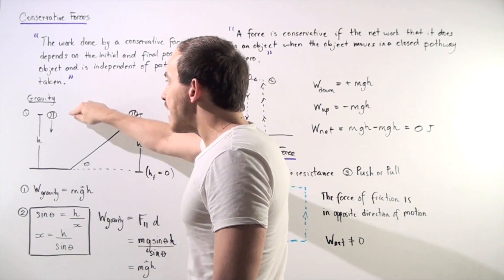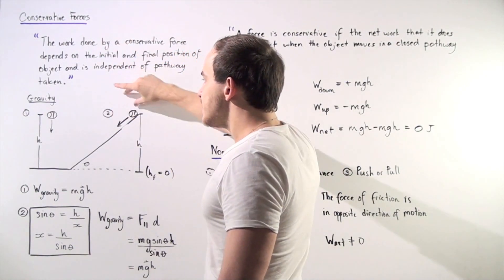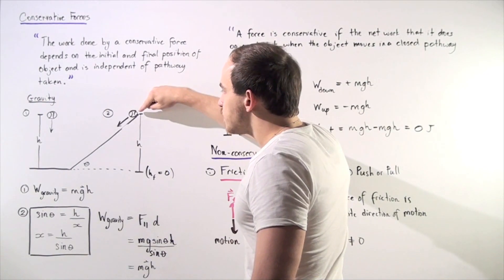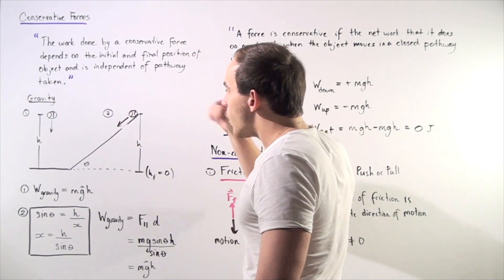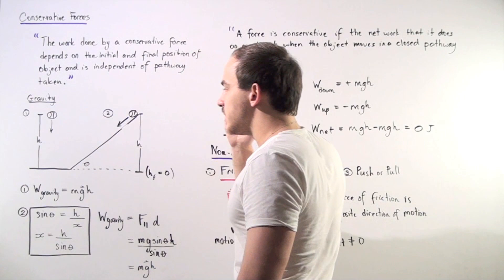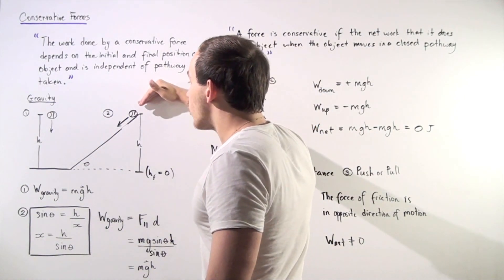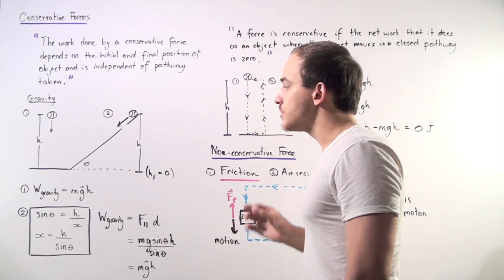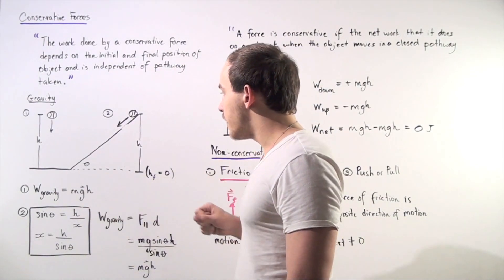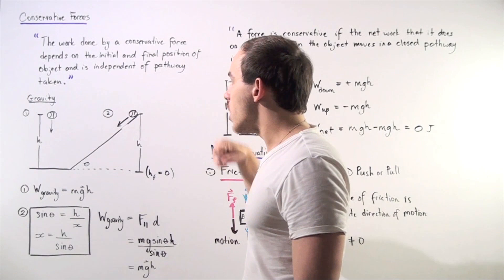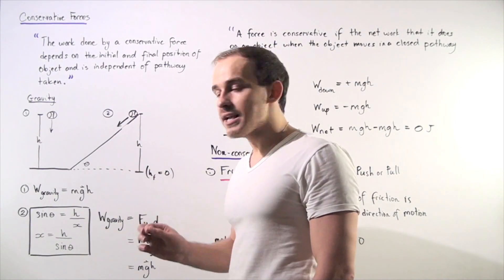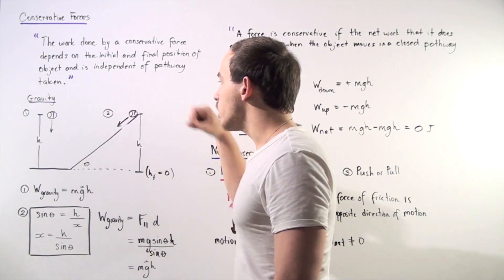For the force of gravity to be a conservative force, case two should also give us the same exact work. Let's find our displacement along the inclined plane. Our motion is down the inclined plane, so using the trig function sine: sine of theta equals h divided by x, where x is the distance along the inclined plane. Solving for x, we find that x equals h divided by sine theta. That's our displacement along the inclined plane.